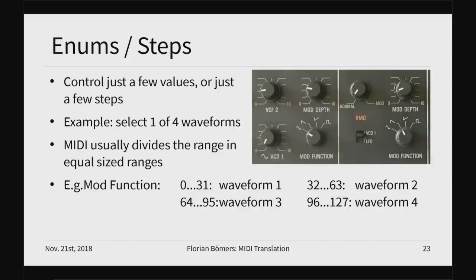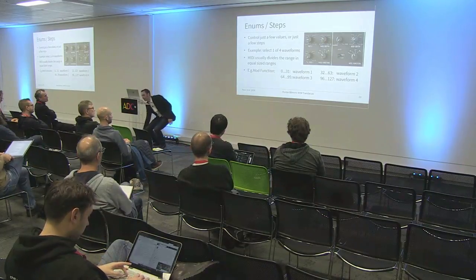In MIDI you can also have a knob with four waveforms for the mod function. The typical convention is that you just divide the range by how many different parameter values you have. So for a mod function with four waveforms, values 0 to 31 will be waveform 1, values 32 to 63 will be waveform 2, and so on. As you turn the knob it'll send one of those ranges. This kind of convention also makes it possible to connect a synthesizer with a completely different device, like a cheap controller with knobs that send 0 to 127 — and as you slowly move, at one point it'll switch to the next waveform. So it's very interoperable.